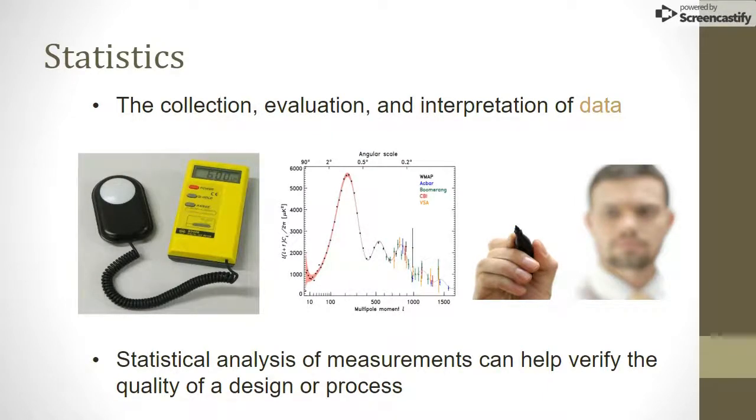A data set is basically just a collection of numbers, usually measurements of something. On its own, a data set doesn't provide much useful information. Statistics is the field that takes raw data and tries to make sense of it, to show patterns, trends, or other revealing information that can help the random assortment of numbers tell a story.